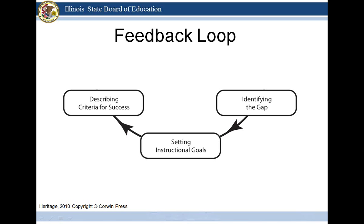This enables students to know what they are learning and why, which results in students becoming active participants in their learning process instead of passive recipients. The instructional learning goal identifies what students will learn during the course of the lesson or lessons. The success criteria identifies what it takes to meet the learning goal and is used as checks on learning.